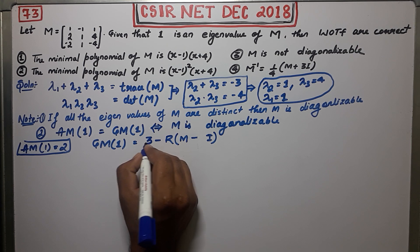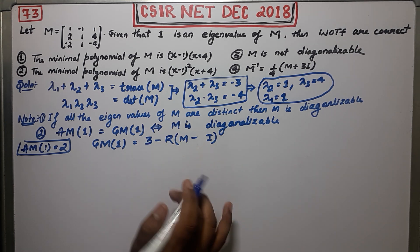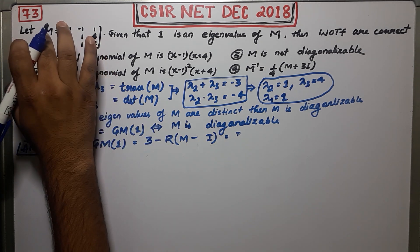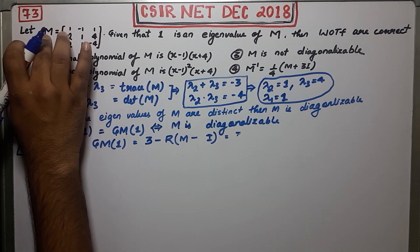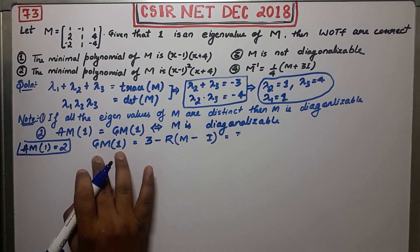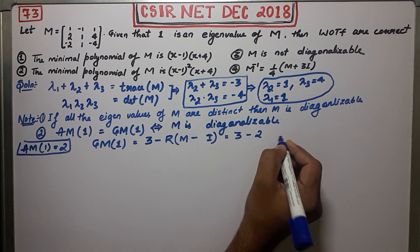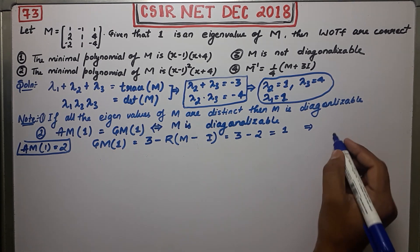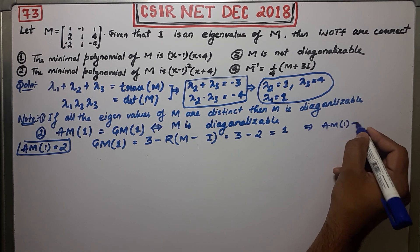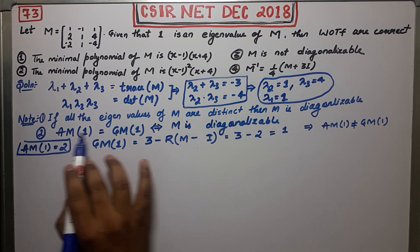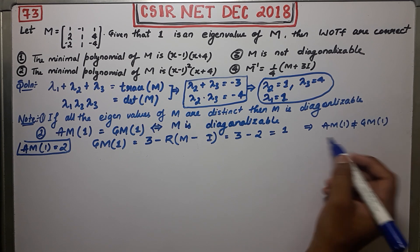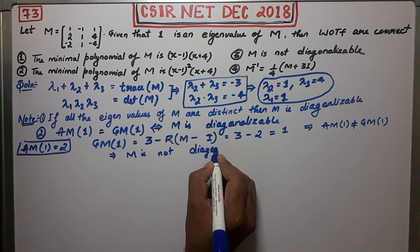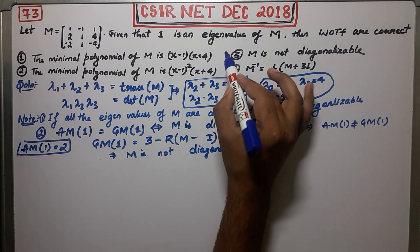Find the rank of M minus I. Subtracting the identity from M and computing the rank gives rank equal to 2, so the geometric multiplicity is 3 minus 2 equals 1. Since algebraic multiplicity (2) does not equal geometric multiplicity (1), and this is an if-and-only-if note, we conclude M is not diagonalizable. So option three is correct.